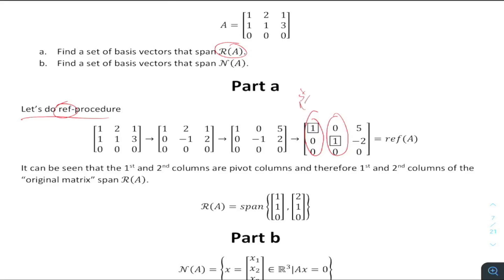These are the pivot columns — this is the first column and this is the second column. Whenever you see that, you determine the pivot columns of the given matrix. We determine that the first and second columns are the pivot columns.